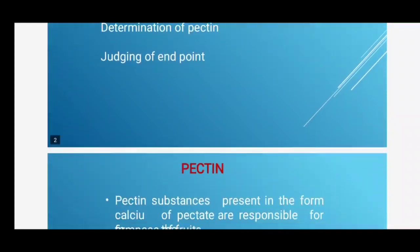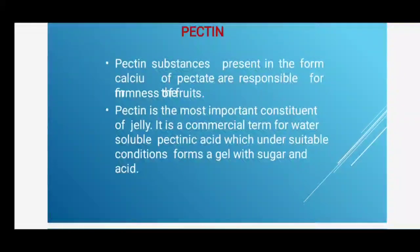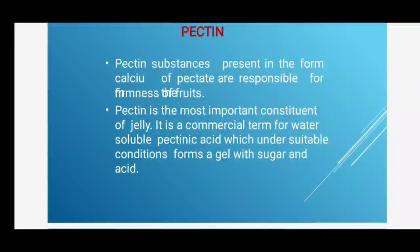Pectin is a substance present in the form of calcium pectate, responsible for the firmness of fruits. It is the most important constituent of jelly — a commercial term for water-soluble pectic acid which, under suitable conditions, forms a gel with sugar and acid. In the early stage of fruit development, the pectin substance is water-insoluble protopectin, which is converted into pectin by the enzyme protopectinase.